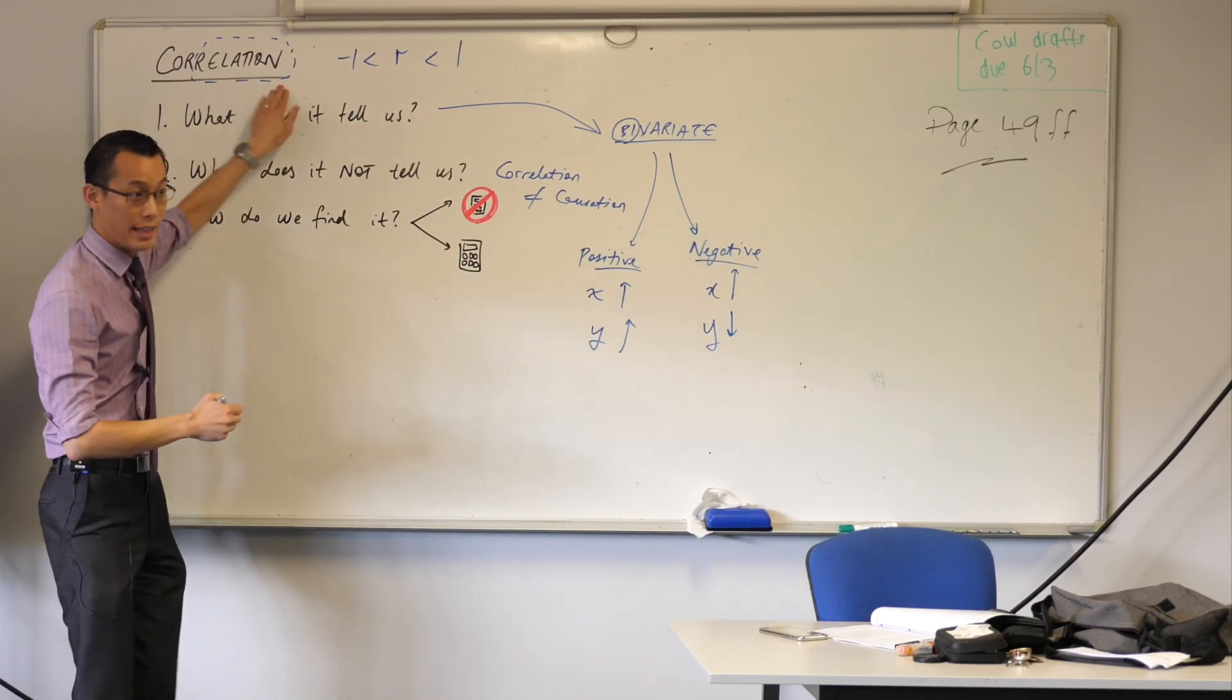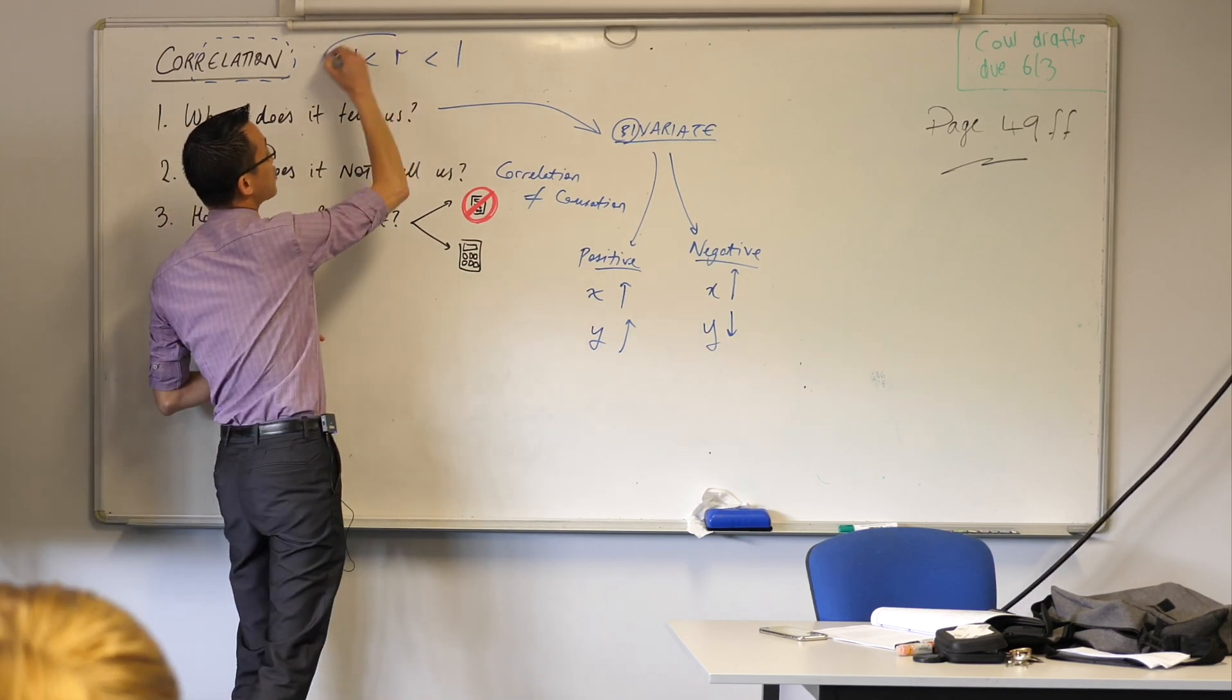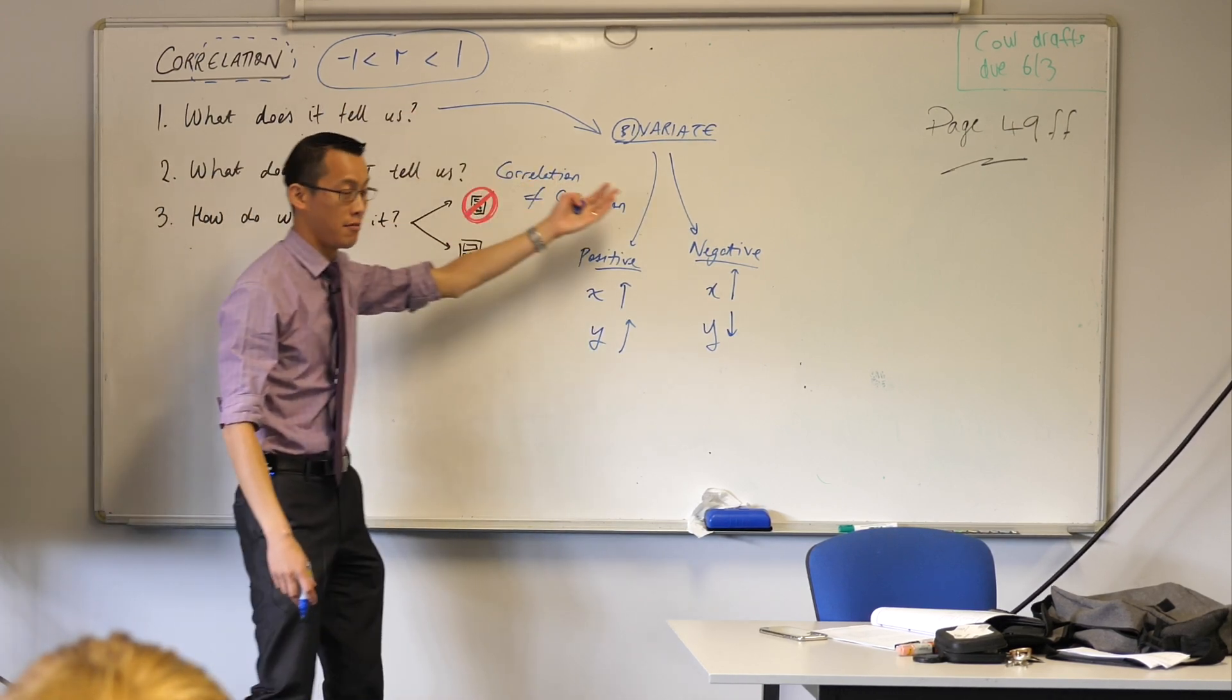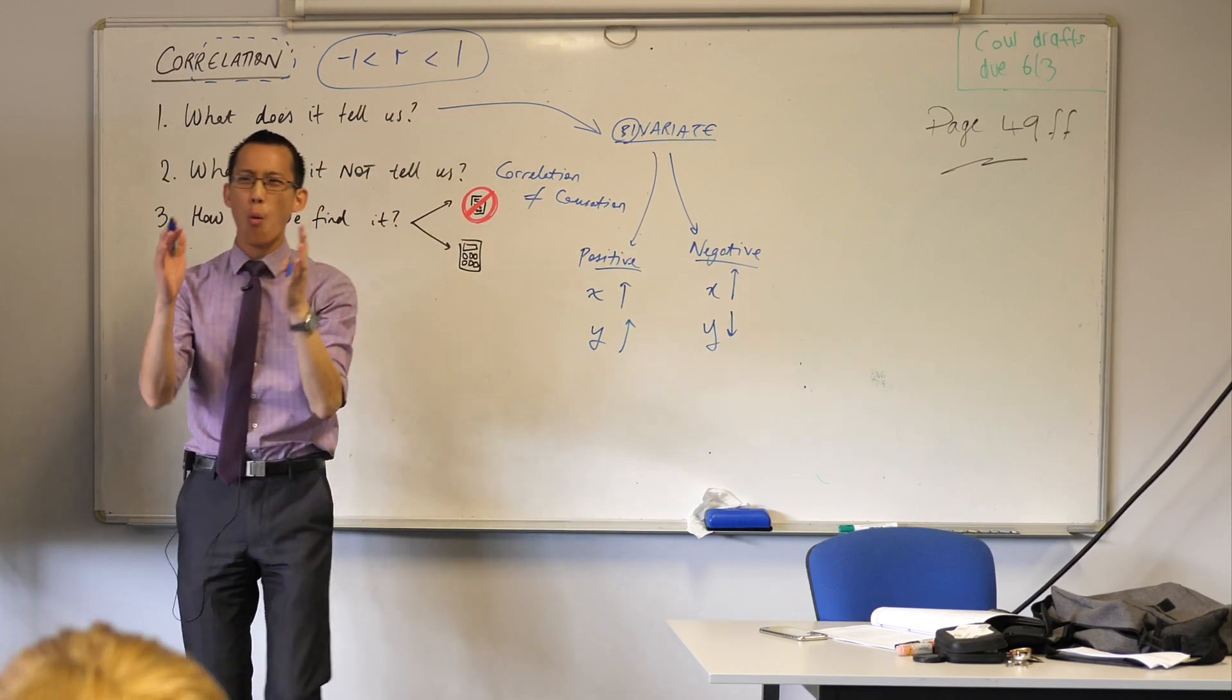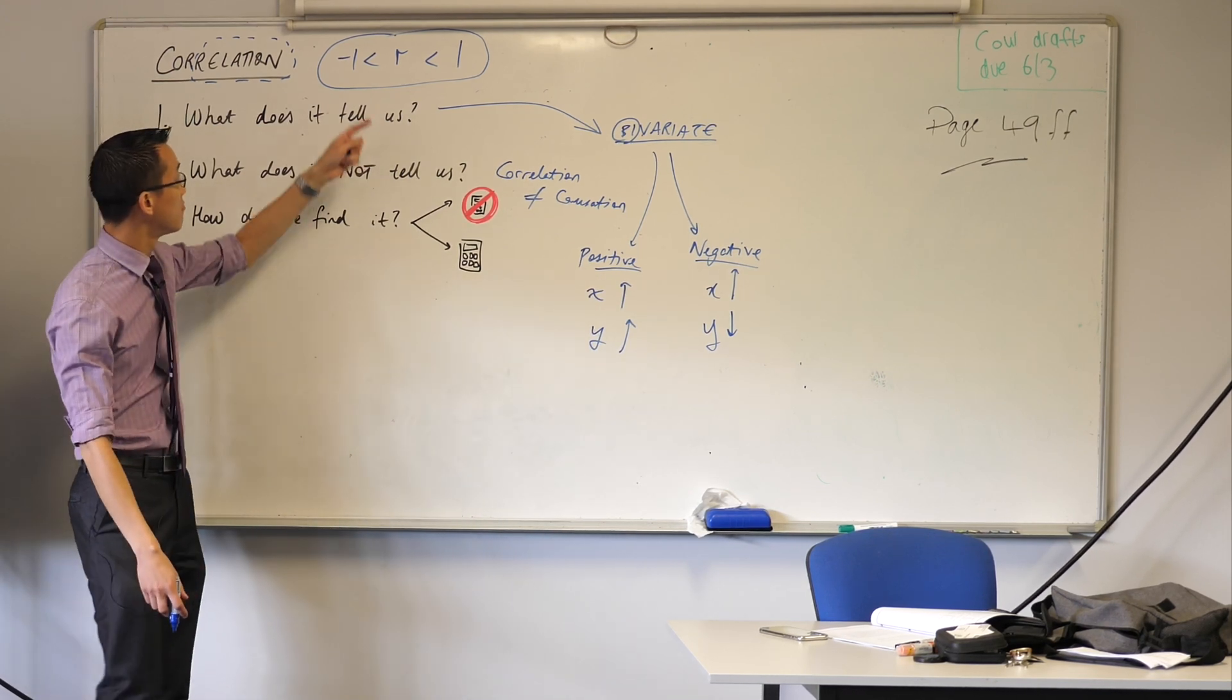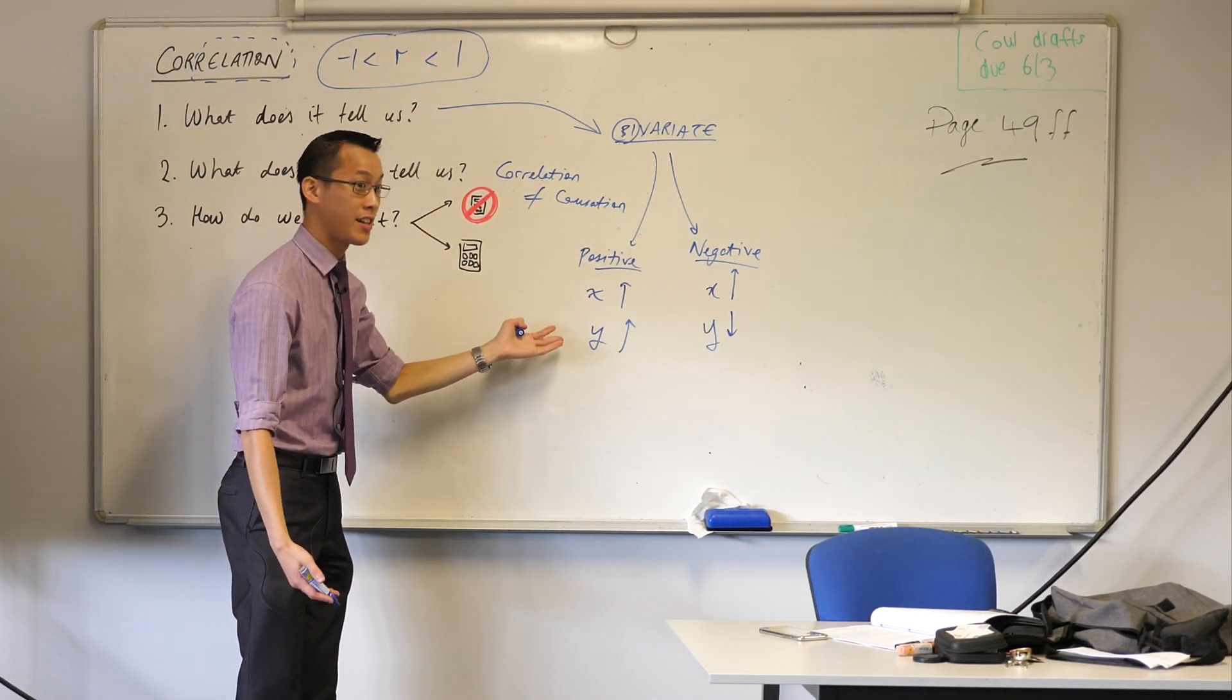But for now, what I'd love you to indicate is correlation, which we're going to use the letter R to indicate, right? It's kind of like R for relation. It's always going to be between negative one and one. If it's negative, you've got a negative correlation. If it's positive, you've got a positive correlation. What kind of R value would you expect for something where there's no correlation? We said minus one is a negative correlation and one is a positive correlation. What do you reckon, Tal?